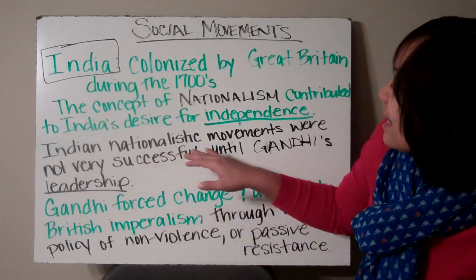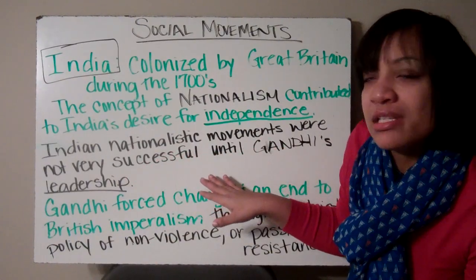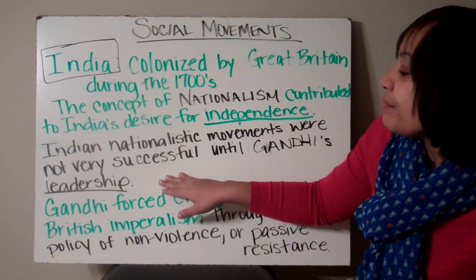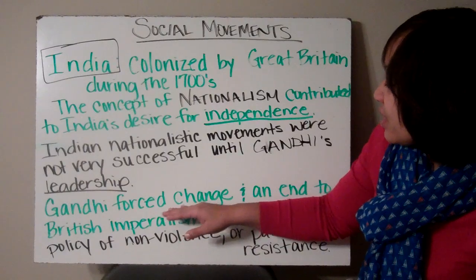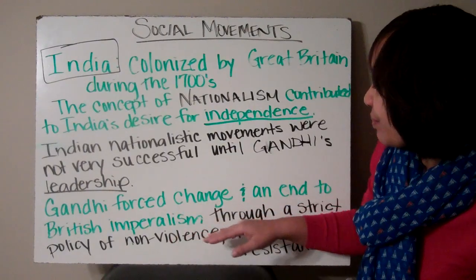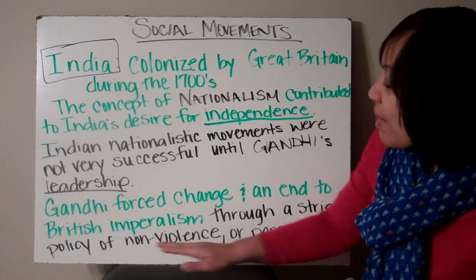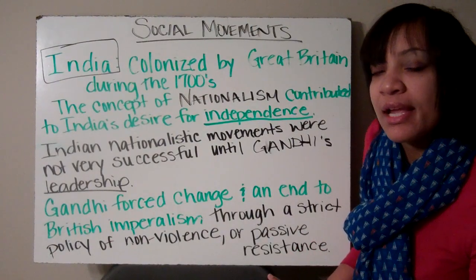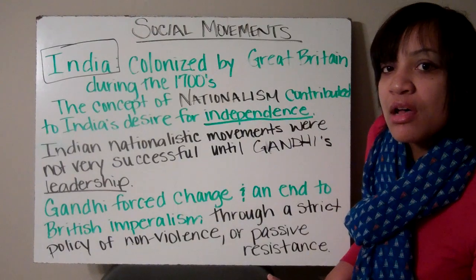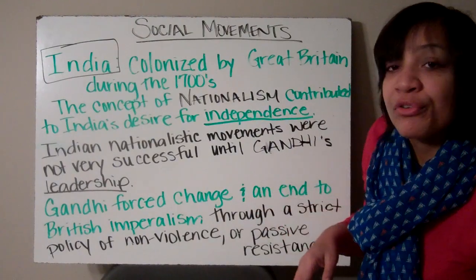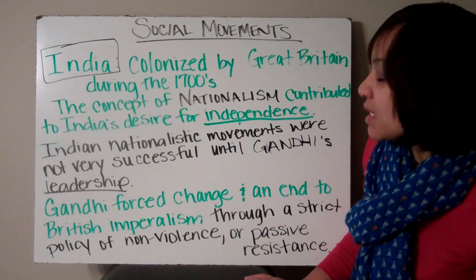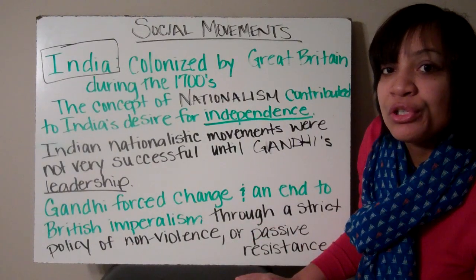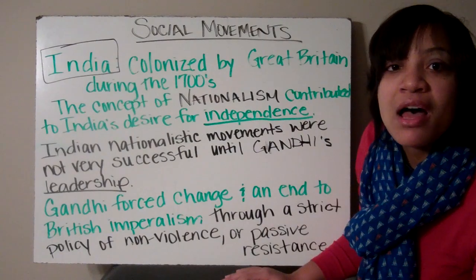Indian nationalistic movements were not very successful in the beginning until Gandhi's leadership. Gandhi forced change and an end to British imperialism through a strict policy of non-violence, or passive resistance — he didn't fight back, he did demonstrations. Gandhi is going to be used as a model for future civil rights movements, like the civil rights movement in the United States. Martin Luther King Jr. followed Gandhi's belief of non-violence.